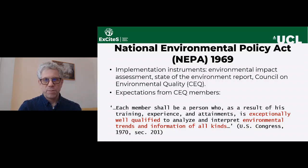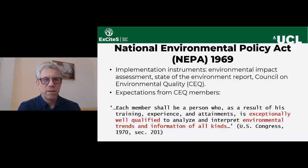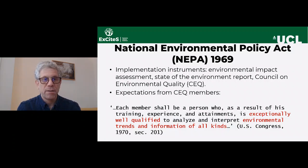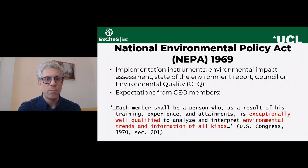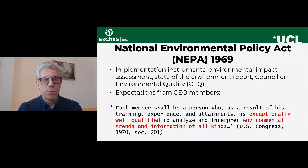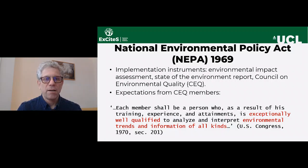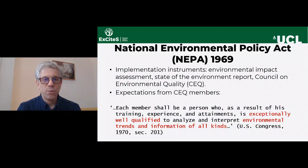Let's start with the first period. A very good marker is the US National Environmental Policy Act from 1969. One of the things it does is implement the tool for assessing environmental impact, telling the federal government that environmental impact assessments should be carried out when different projects are being created. It also created the Council for Environmental Quality, which states that each member shall be a person who, as a result of their training, experience, and attainment, is exceptionally well qualified to analyze and interpret environmental trends and information of all kinds.